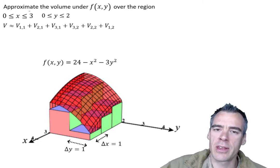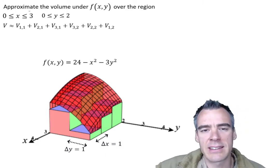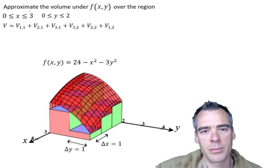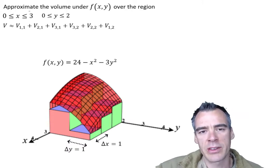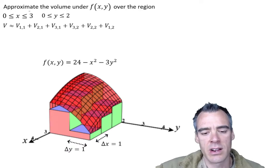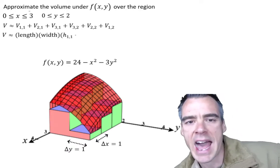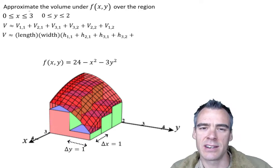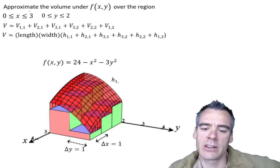And another thing that we can do here is since we know that length and the width are the same for all of them, we can sort of pull that out and multiply the length and the width by all of these heights as we add the heights together. So our total volume is going to be our length times our width times the height of each of these rectangular columns.